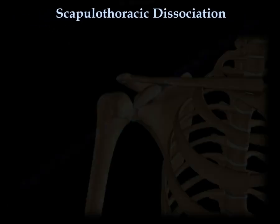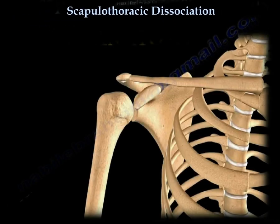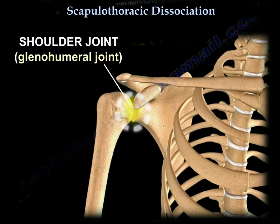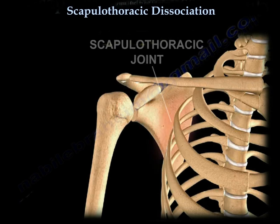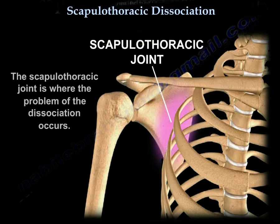Scapulothoracic dissociation. Here is the anatomy. You can see the shoulder joint or the glenohumeral joint. Here is the scapulothoracic joint, where the problem of the dissociation occurs.